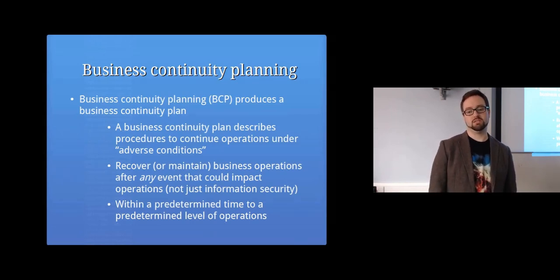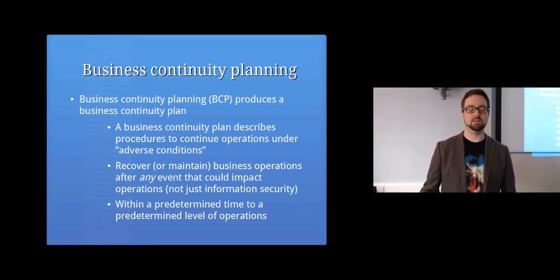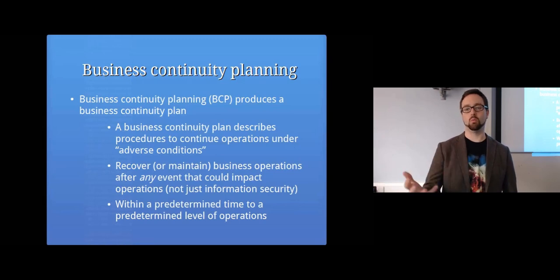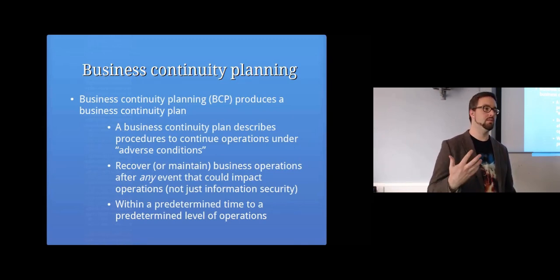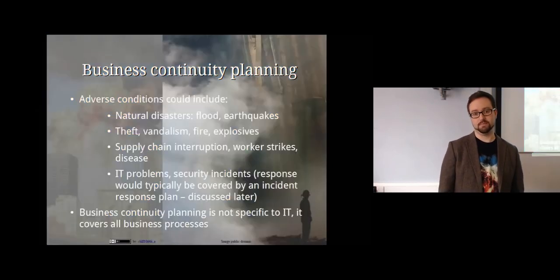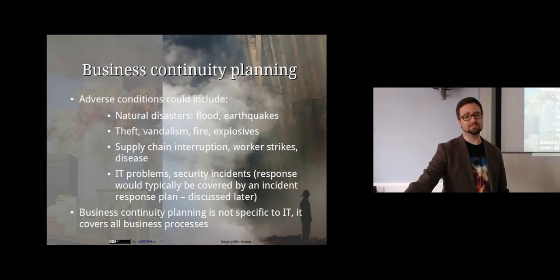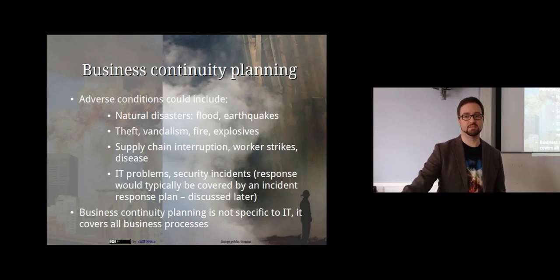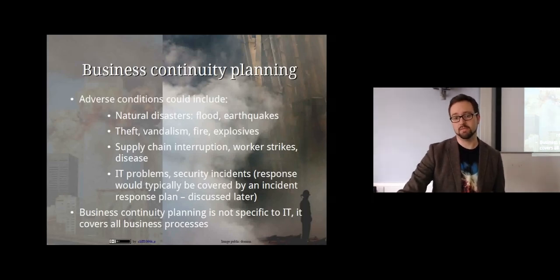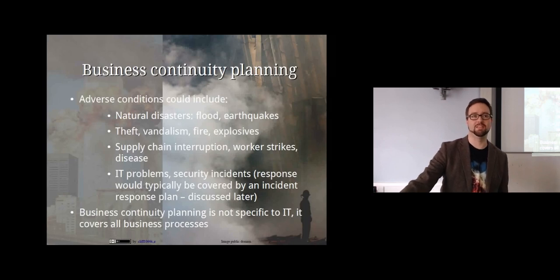A business continuity plan basically describes how you would continue to operate when things are going wrong and how to actually recover your operations and your ability to provide services after an event. It's not just information security — all parts of the organization need to be able to recover to a working state within some predetermined time. This includes planning for natural disasters like floods or earthquakes, or theft such as someone stealing your server in the middle of the night.